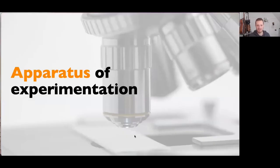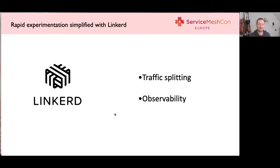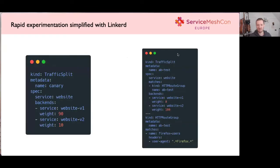That brings me to the apparatus of this experimentation. After looking at a lot of different solutions, what we settled on time and time again was Linkerd. The two key tenets of this are traffic splitting and observability, both of which are underpinned by super easy-to-use developer experience that time and time again has saved us a ton of effort by just working out of the box. When we think about how these things work, there's a lot of effort being put in at the SMI spec level from the CNCF SIGs who are caring about the future of these kind of implementations and how end users are going to work with them.